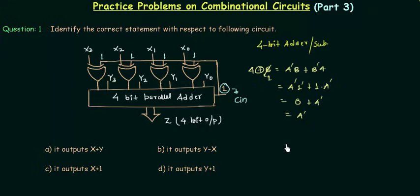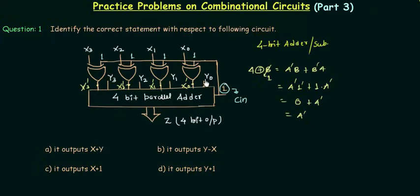Whenever one input to the XOR gate is 1, it acts as a NOT gate — that's why we call it a control inverter. So at the outputs of the 4 XOR gates I am having X3 complement, X2 complement, X1 complement, and X0 complement. This feeds into a 4-bit parallel adder, which will add X0' with Y0, X1' with Y1, and so on for the last 2 bits.